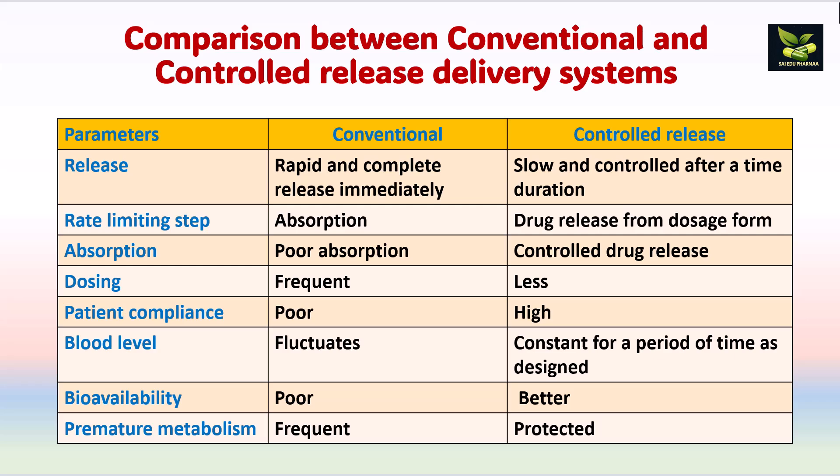There was a need for developing controlled release systems due to drawbacks of conventional dosage forms. In conventional dosage forms, rapid release occurs and the complete quantity is released immediately. In controlled release, release is slow and controlled over a set time duration. For conventional dosage forms, the rate-limiting step is absorption — involving disintegration, dissolution, and absorption. For controlled release, drug release from the dosage form itself is the rate-limiting step. Absorption is poor in conventional but controlled in CR systems.